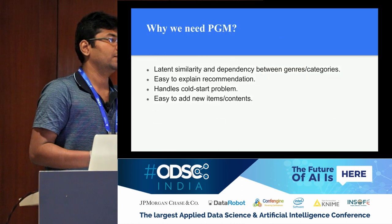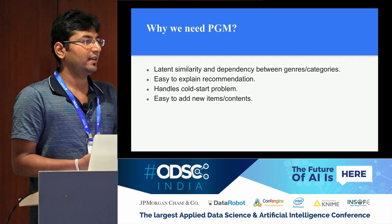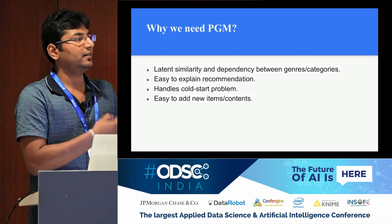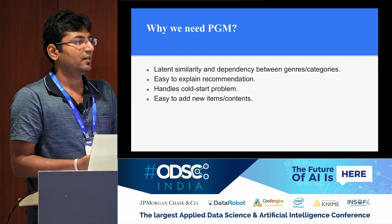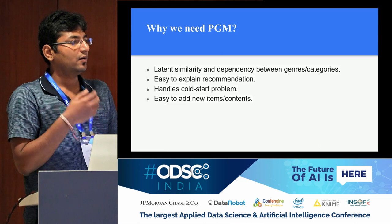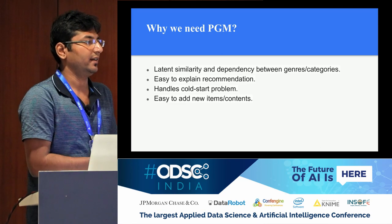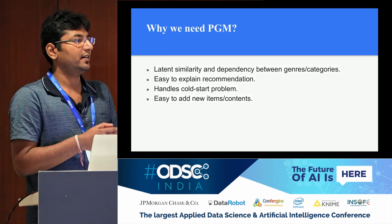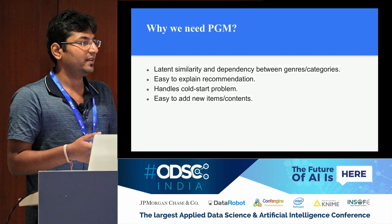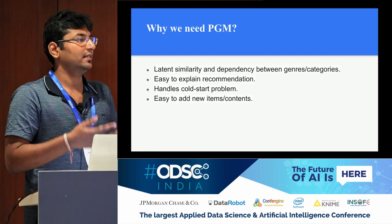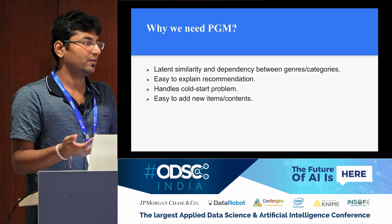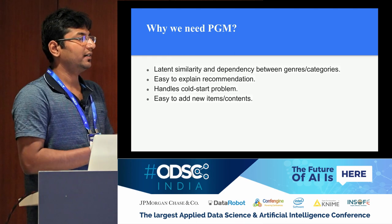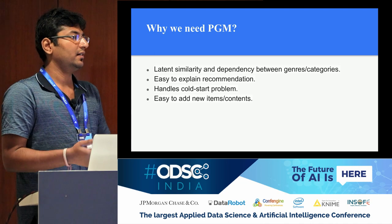The joint probability distribution of A, B, and C is basically the product of individual probabilities: probability of A, probability of B, and probability of C given A and B. If we have this expression and the conditional probability tables for any graph, we can calculate any kind of query. The benefit of using a PGM here is that A, B, and C being interdependent brings in the essence of content-based filtering, and considering co-occurrence of nodes brings in the collaborative filtering essence — both combined into a single graph.